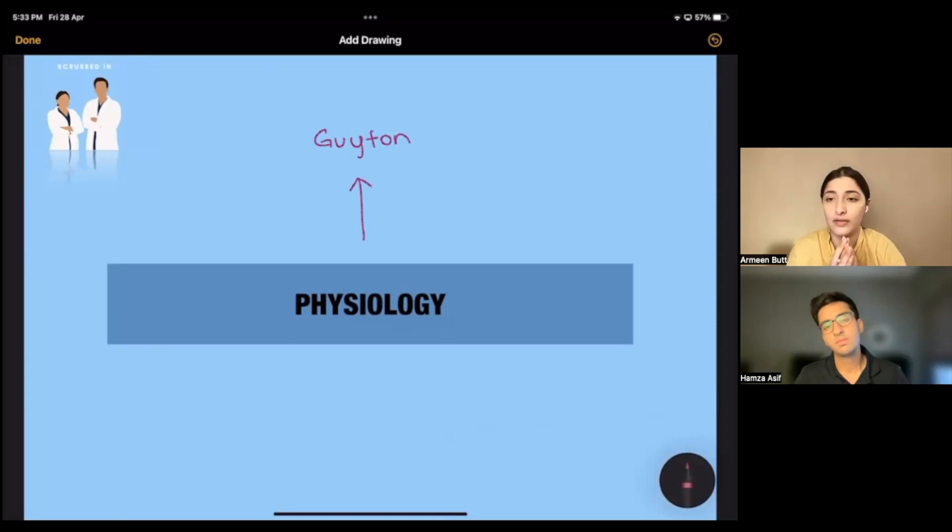The thing to remember about this is if you are thinking of giving Step 1 in first year and second year, and you want to give it later on during your fourth year or whenever that is, then your physiology has to be very strong during those first two years of MBBS. And the reason is that your physiology is going to form the basis of your understanding for pathology.